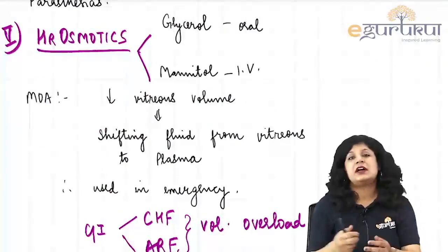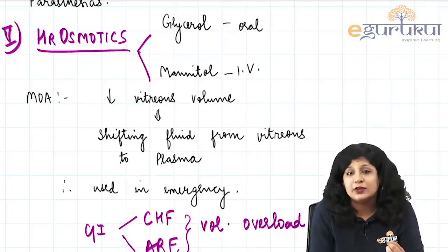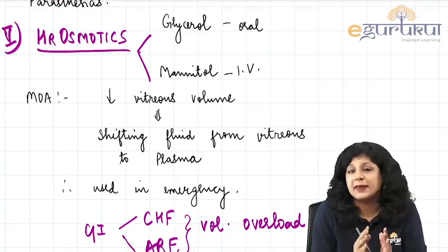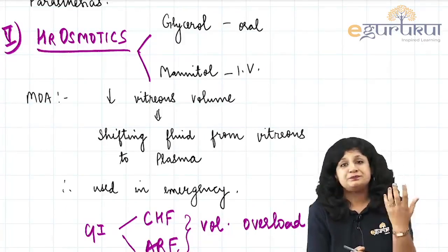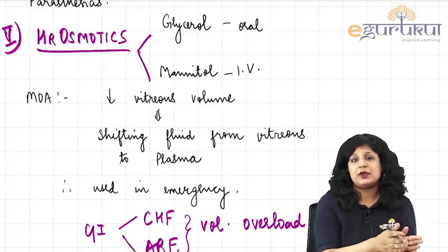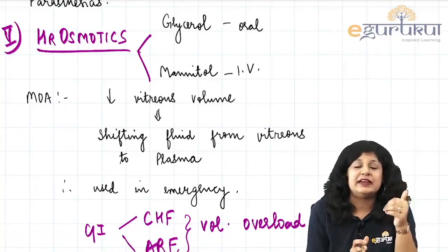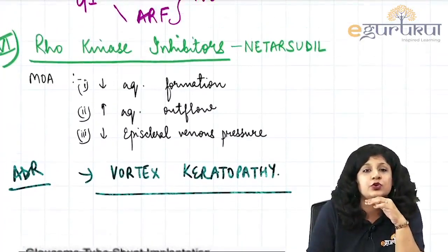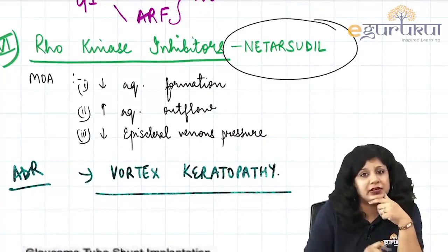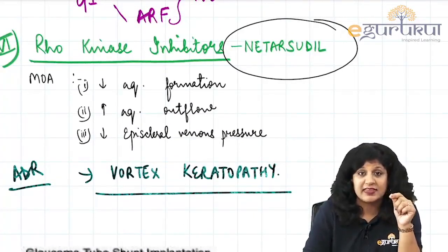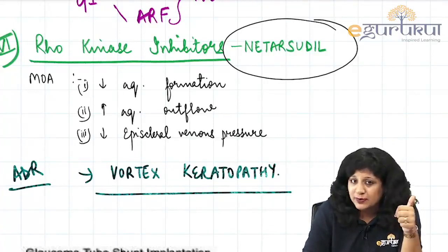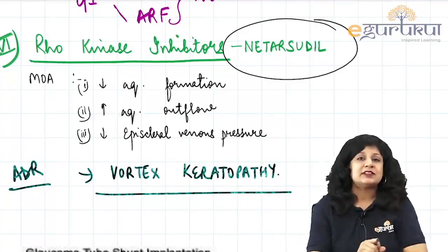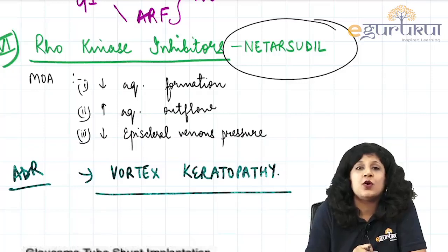Hyperosmotic drugs: oral glycerol and IV mannitol act by decreasing vitreous volume (not aqueous), so they are not maintenance drugs — used in emergencies to shift fluid from vitreous to ECF. Contraindicated in volume overload conditions. A new class is rho kinase inhibitors (e.g., netarsudil), which have three mechanisms: decreased aqueous formation, increased aqueous outflow, and increased episcleral venous pressure. Important side effect: vortex keratopathy (cornea verticillata).